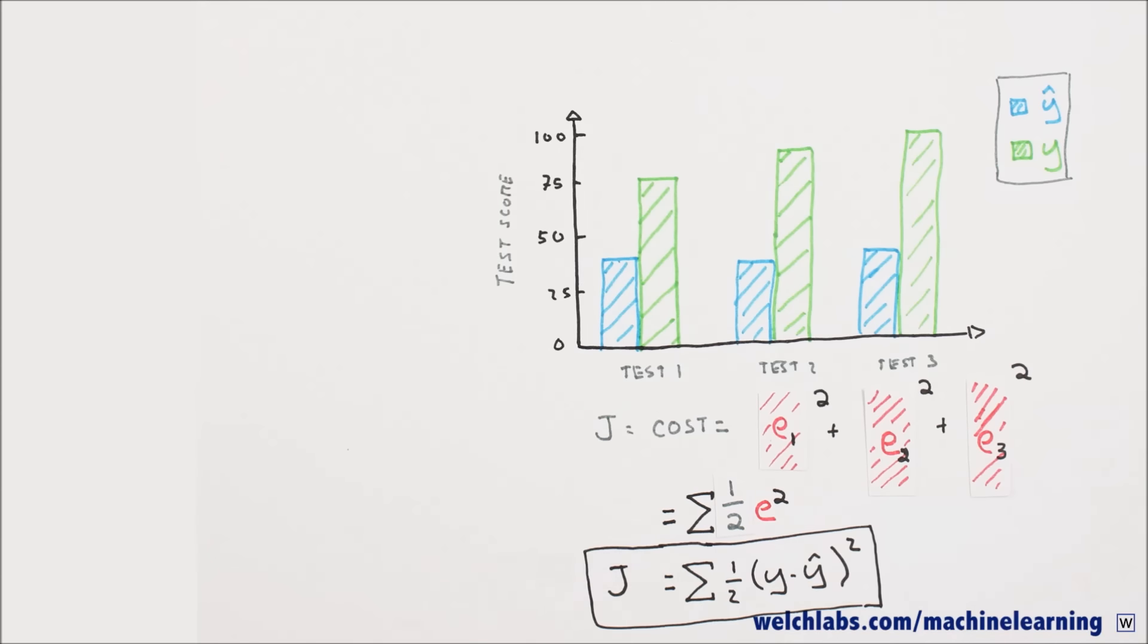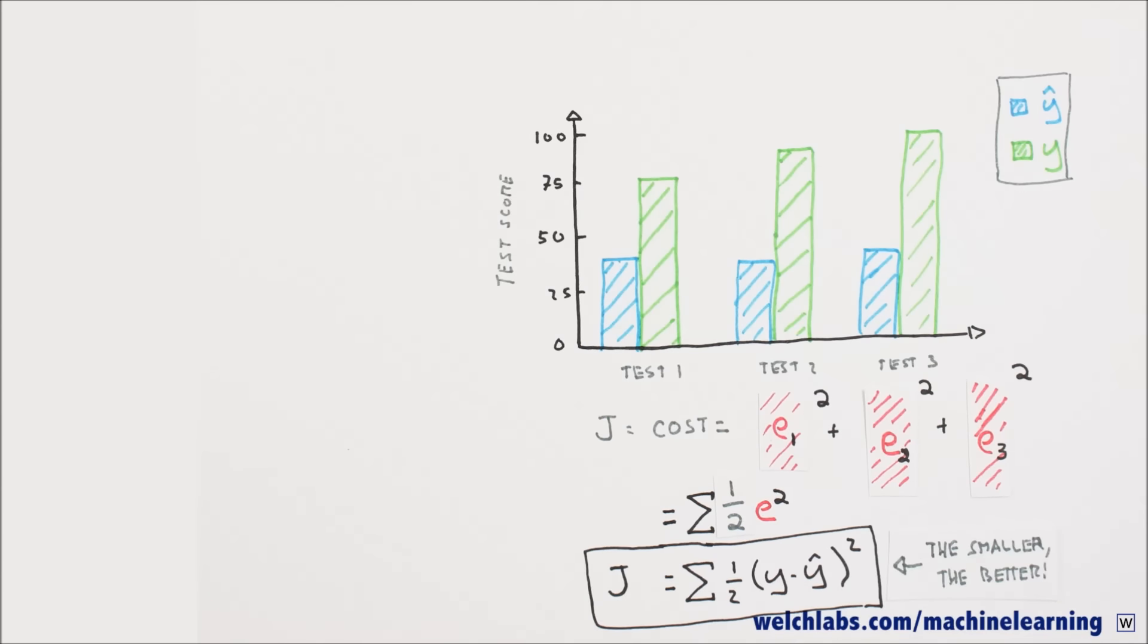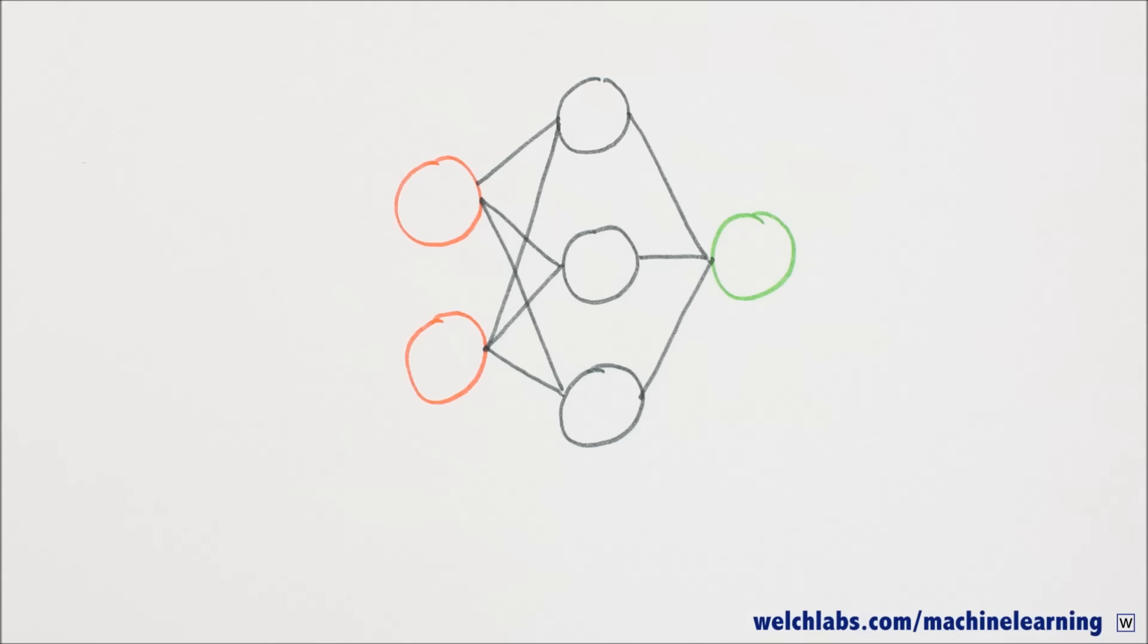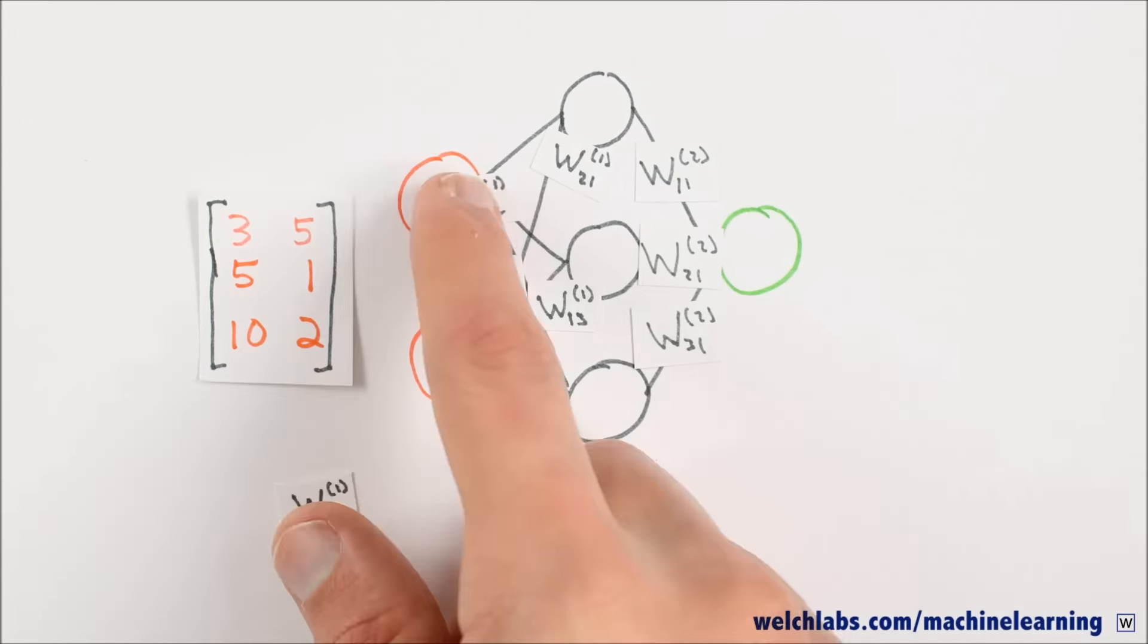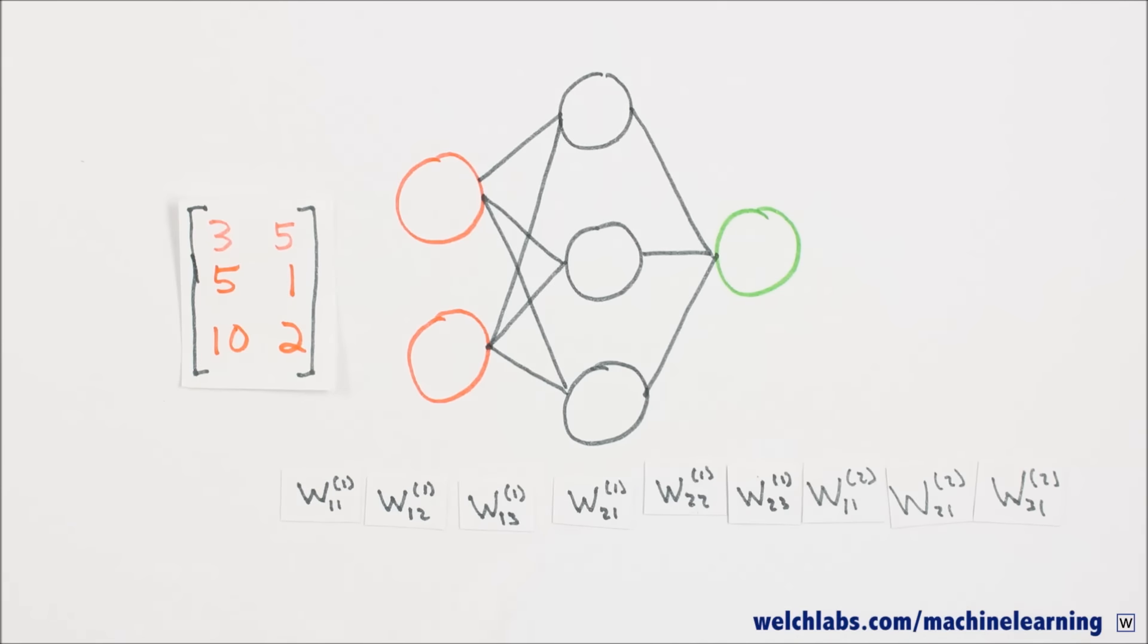Now that we have a cost, our job is to minimize it. When someone says they're training a network, what they really mean is that they're minimizing a cost function. Our cost is a function of two things, our examples and the weights on our synapses. We don't have much control over our data, so we'll minimize our cost by changing the weights.